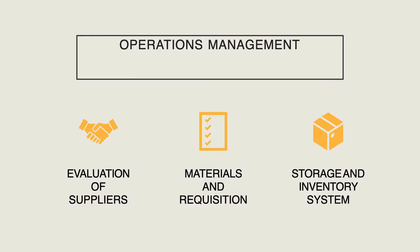In operations management, there are three basic pillars we need to understand. First is the evaluation of suppliers, second is materials and requisition, and third is storage and inventory systems.